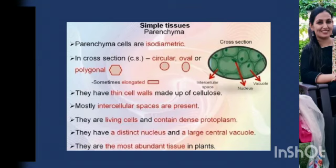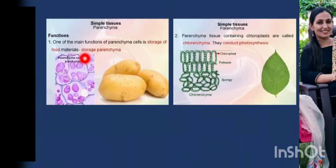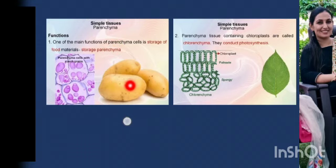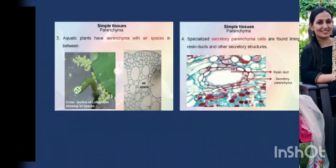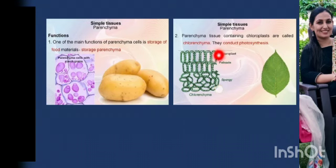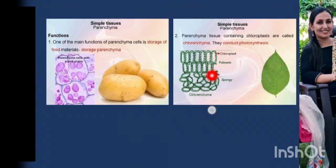Parenchyma cells are also found in xylem and phloem. Now let us see the types of parenchyma tissue. The first is storage parenchyma — these cells are large as they store nutrients and water. The main function of storage parenchyma is the storage of food like starch, fats and proteins. The next type is chlorenchyma, where the parenchyma cells contain chloroplasts. These chloroplasts help in the process of photosynthesis, so chlorenchyma is generally found in the mesophyll of leaves where photosynthetic activity takes place.